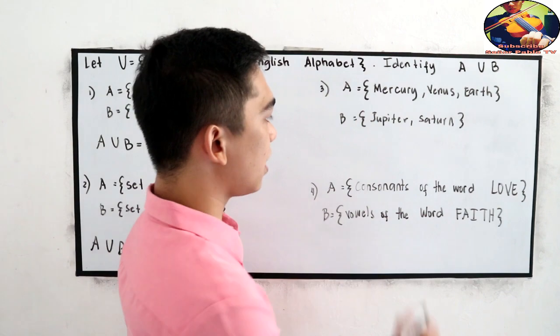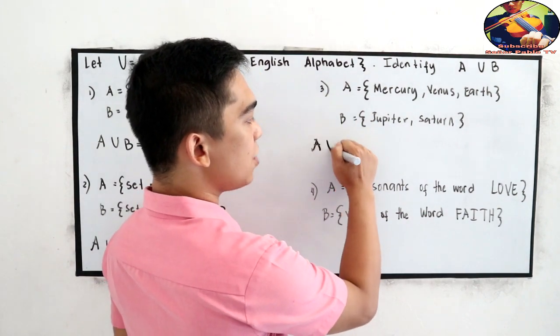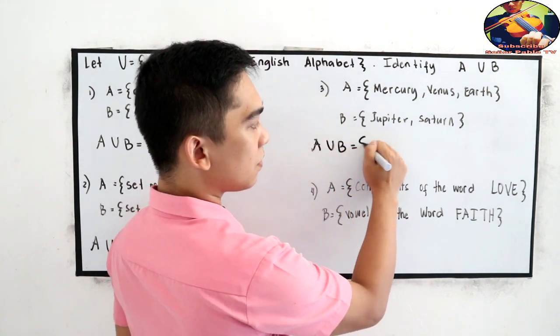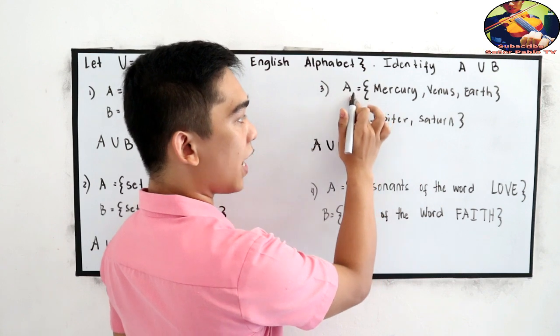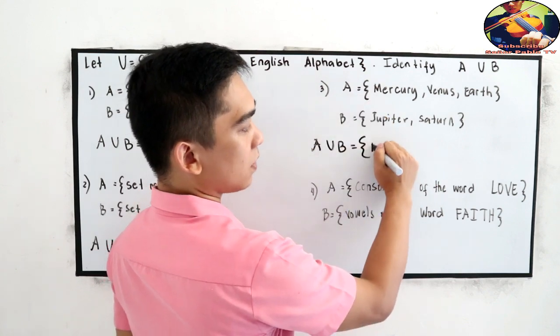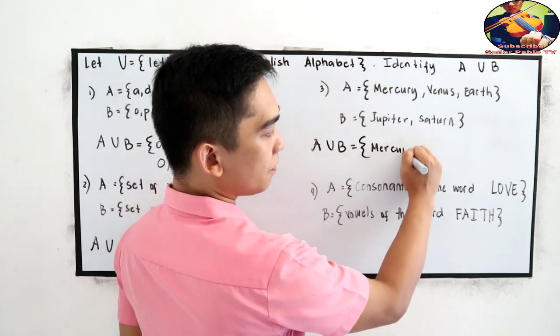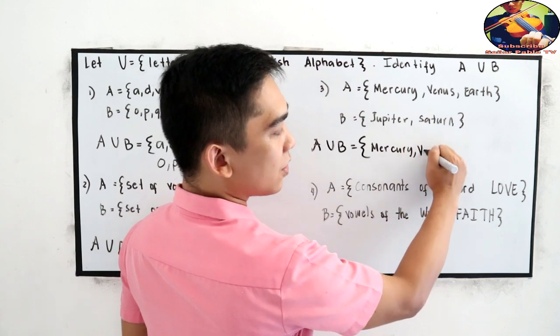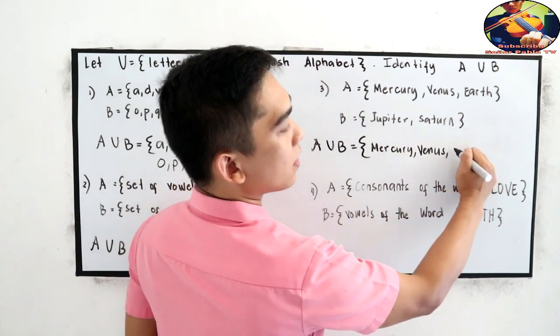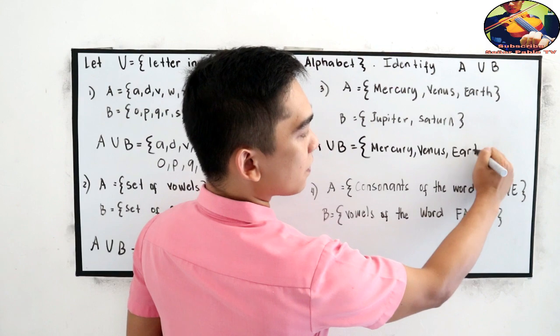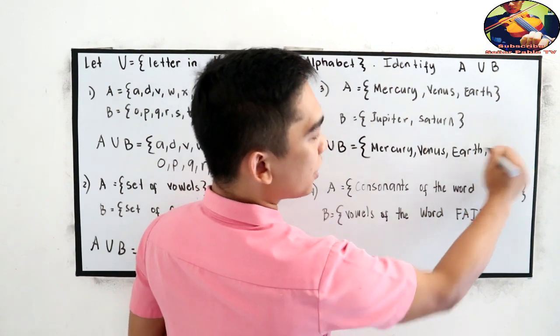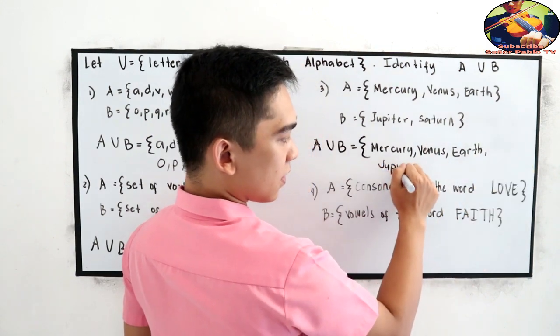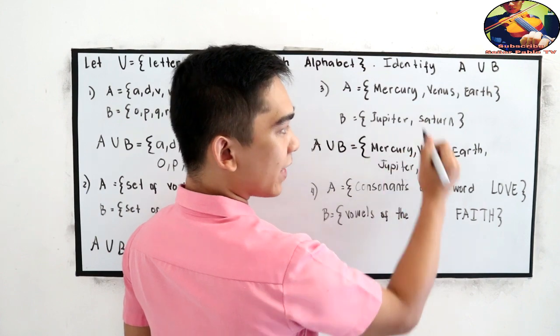Next, number 3. A union B, combine the elements in A and B. Mercury, Venus, Earth, Jupiter, then Saturn.